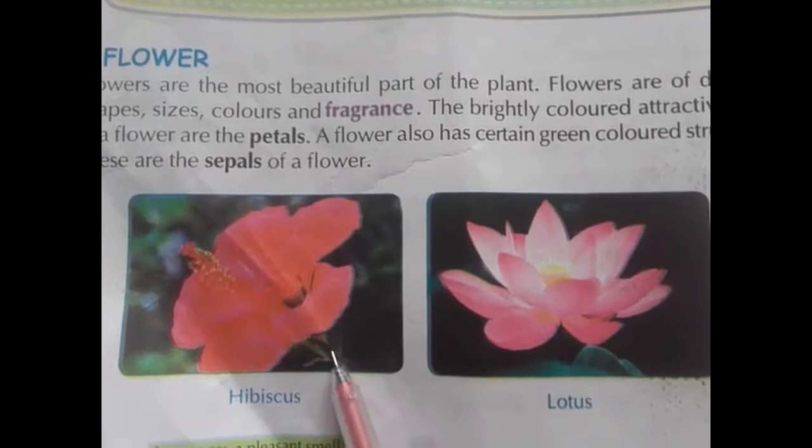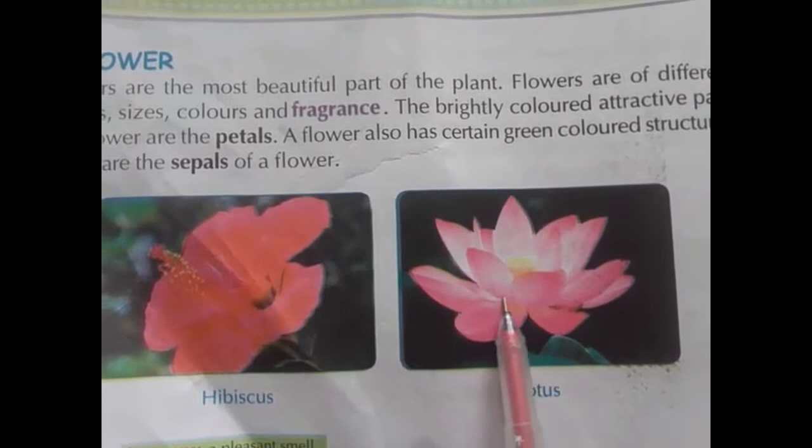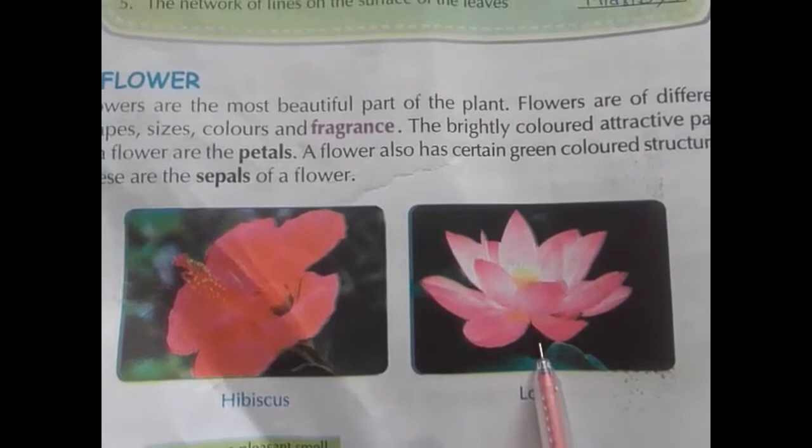And in the below, there is a green color structure. They are called sepals. In this picture, we have a lotus flower. In the lotus flower, we have so many petals, and in the downward part, we have a green color structure. They are also called sepals.